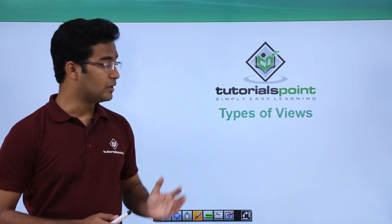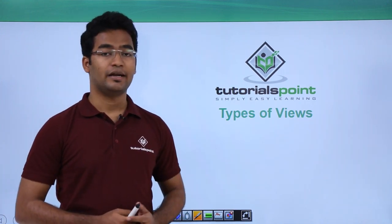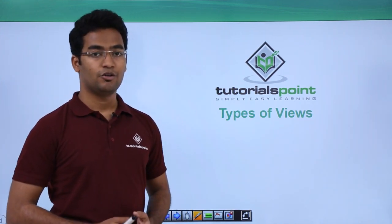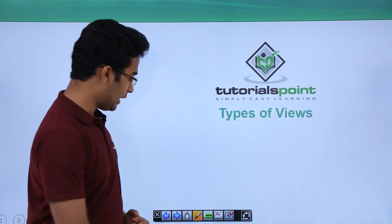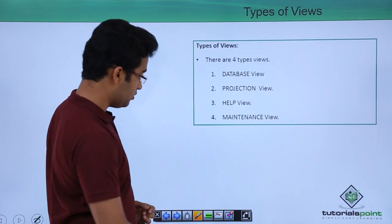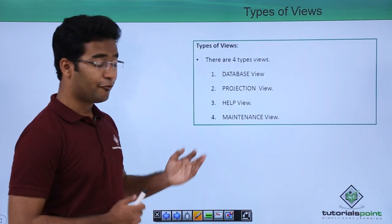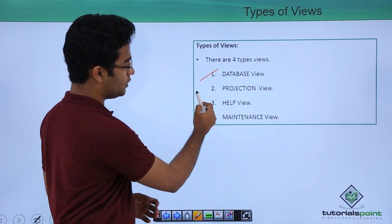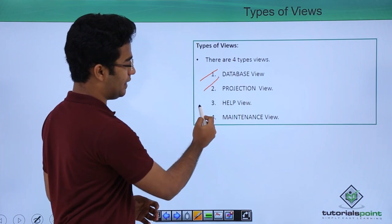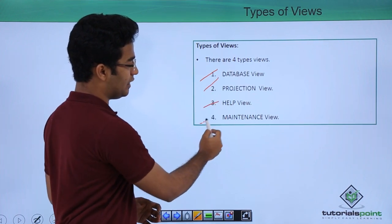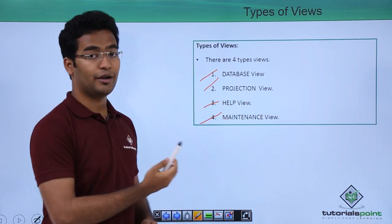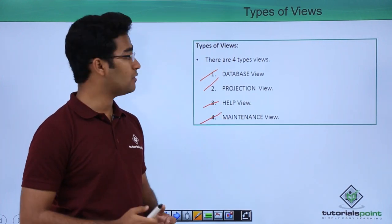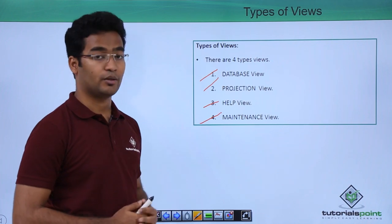In this video we will see the types of views that are being used in ABAP dictionary. There are 4 types of views: database view, projection view, help view, and maintenance view. In this video we will see about the database view.